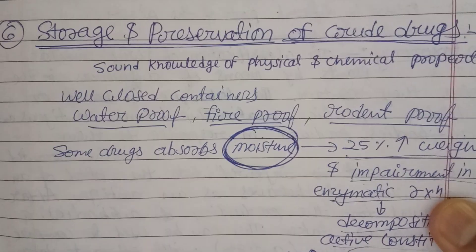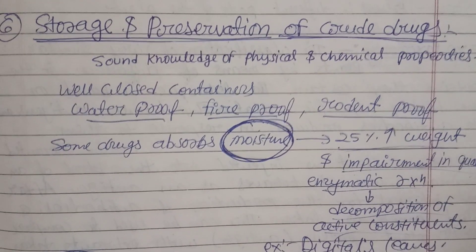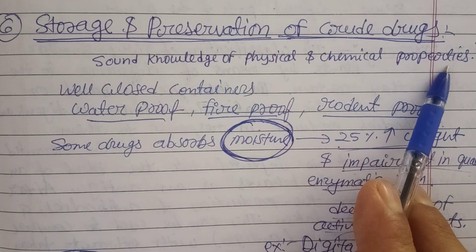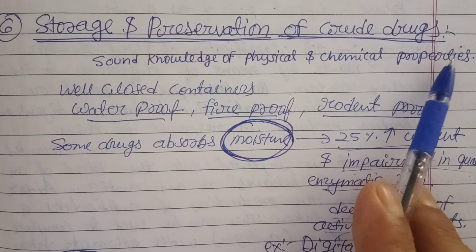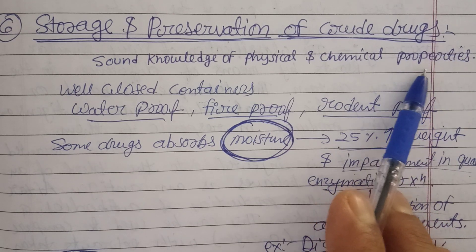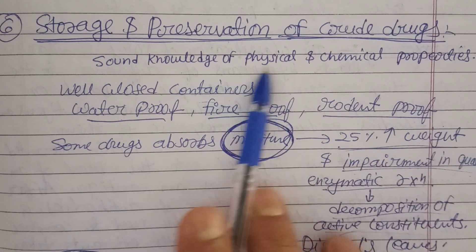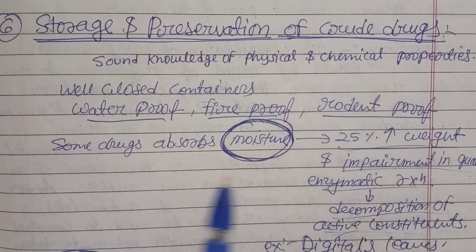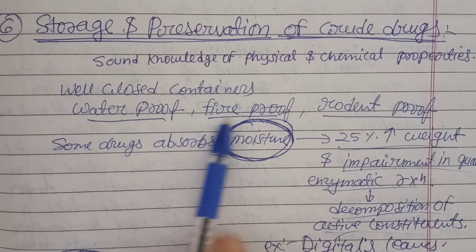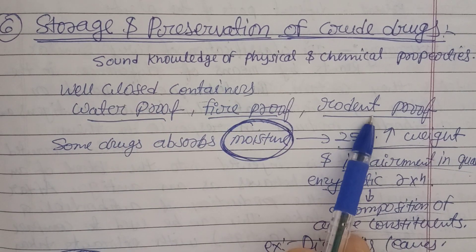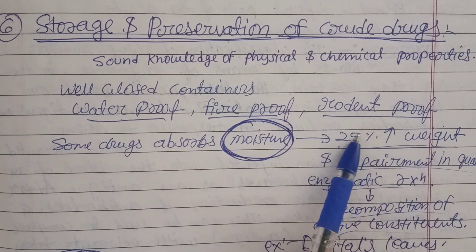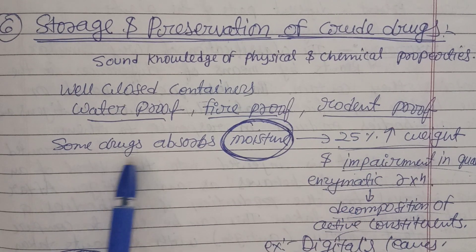Senna and vinca must be pressed and baled properly. Digitalis, ergot, and squill are very sensitive to moisture and are also costly, so special packing is required. Writing answers with these examples will earn good marks. Now, coming to storage and preservation of crude drugs — sound knowledge of the physical and chemical properties of the crude drug is essential, whether it is honey, castor oil, nux vomica oil, latex, acacia, tragacanth, rauwolfia, or ashwagandha.